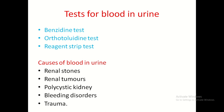Test for blood in urine: benzidine test, orthotoludine test, and reagent strip test. Causes of blood in urine include renal stones, renal tumours, polycystic kidney, bleeding disorders, and trauma to the genitourinary tract.